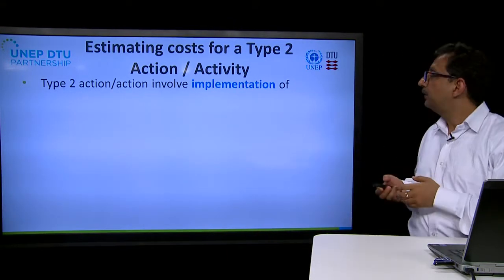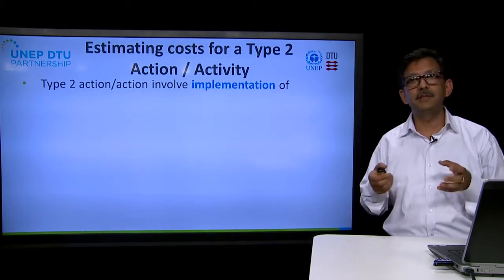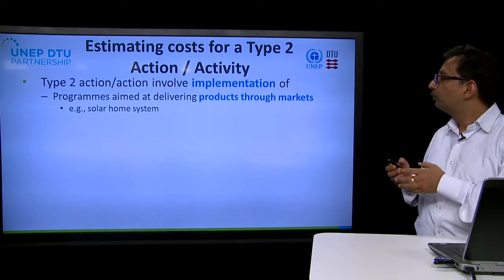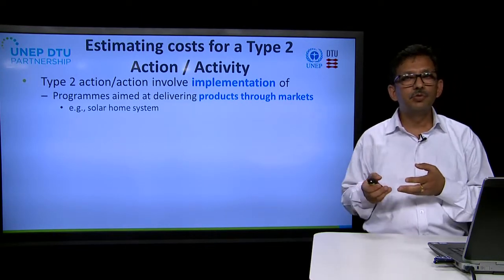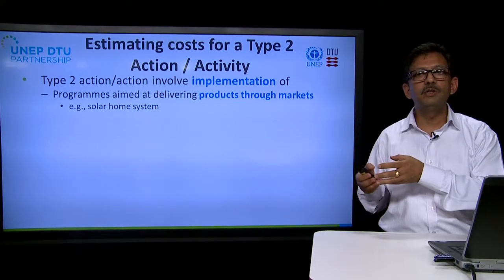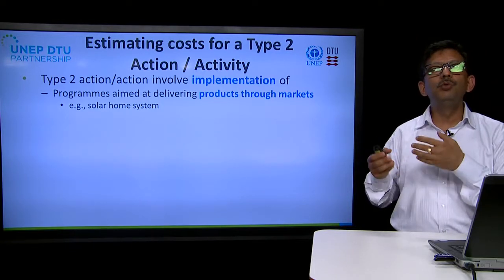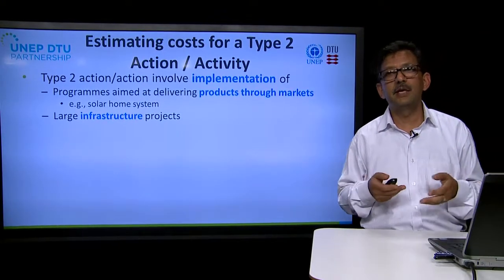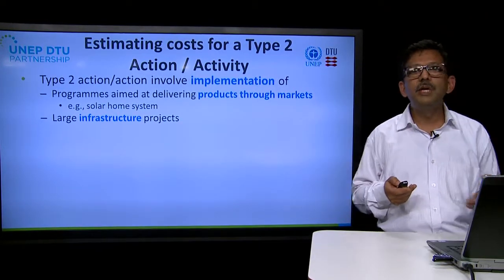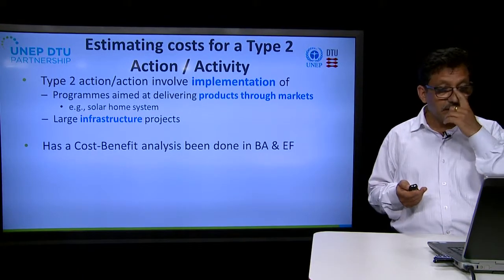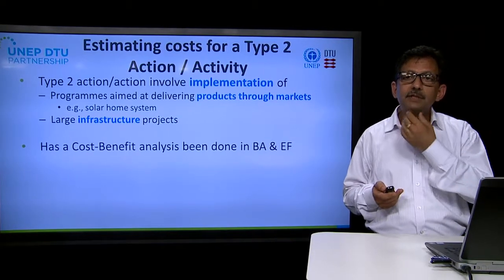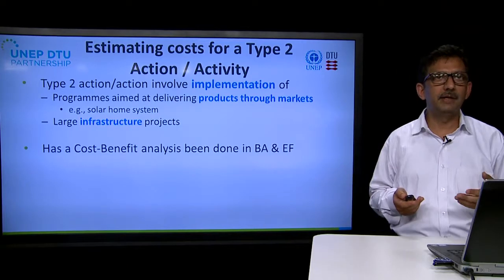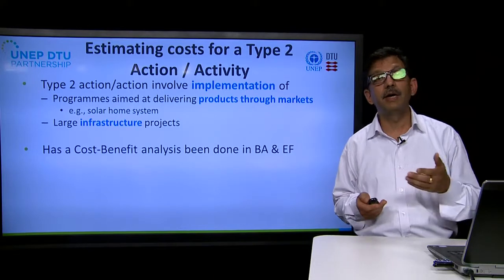Coming to type 2 activities — these are more related to implementation. They could involve the implementation of programs aimed at delivering products through markets, for example solar home systems, where the cost of the technology is borne by the consumers but the government is trying to improve the incentives. There could also be large infrastructure projects like hydro projects or dykes in case of adaptation, which would need public funding. To estimate the cost of these actions, we should first look at our barrier analysis and enabling framework reports, where cost-benefit analysis of different options should have been done. If we have done that, we have a starting basis for identifying costs.